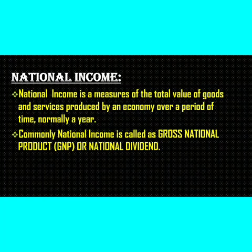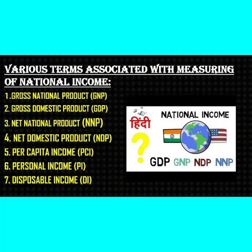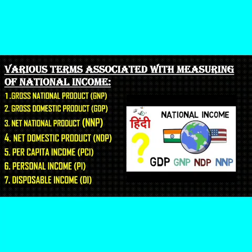Now we will see the various terms associated with measuring national income: 1st, Gross National Product; 2nd, Gross Domestic Product; 3rd, Net National Product; 4th, Net Domestic Product; 5th, Per Capita Income; 6th, Personal Income; 7th, Disposable Income.